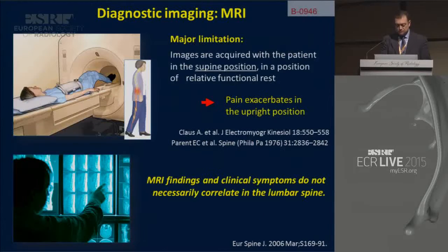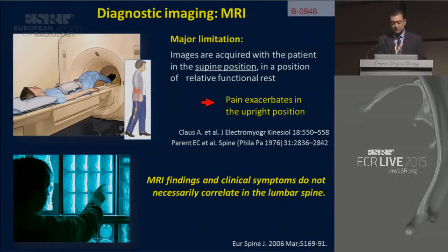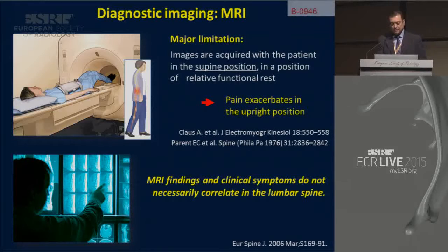The major limitation of MRI is that the image is acquired with the patient in the supine position, in a position of relative functional rest, but pain exacerbates in the upright position. Furthermore, MRI findings and clinical symptoms do not necessarily correlate in lumbar pain.